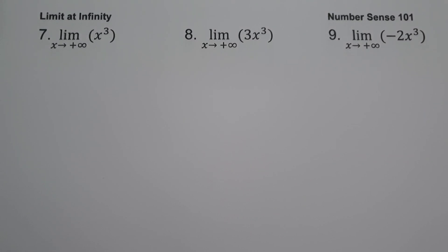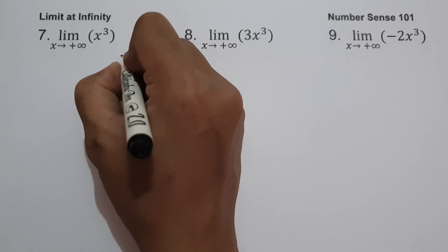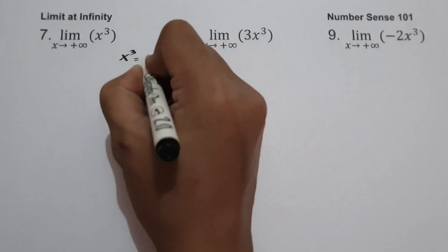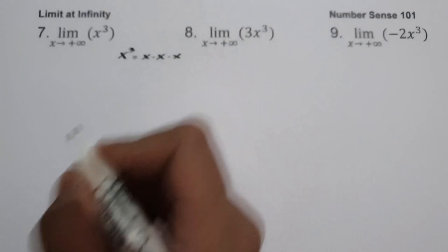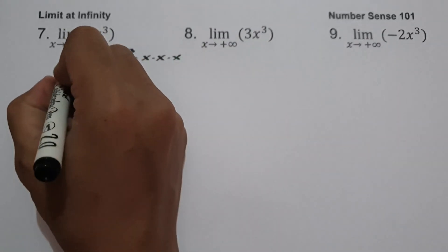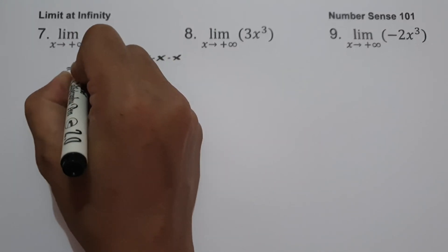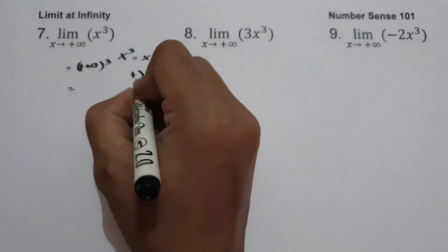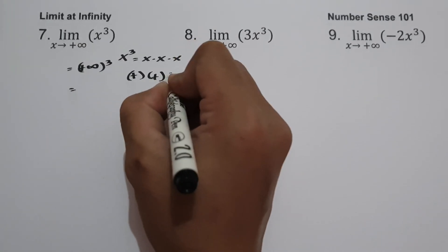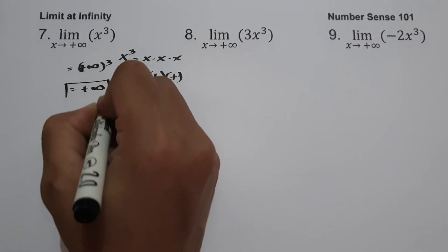On example number 7, what is the value of the limit of x cubed as x approaches positive infinity? x cubed means x times x times x. With x equal to positive infinity, we have positive infinity raised to 3, that is positive times positive times positive, which is positive infinity.